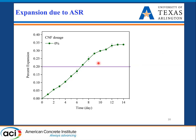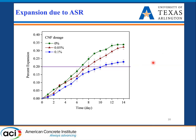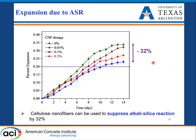The control batch showed expansion above the 0.2 percent threshold, confirming the reactive aggregate. Adding 0.05 percent cellulose nanofiber produced a slight decrease in expansion; 0.1 percent showed further reduction; and 0.3 percent fell somewhere between those two levels. The key takeaway is that cellulose nanofiber can be used to suppress alkali-silica reaction, and we saw a substantial 32 percent decrease in expansion.